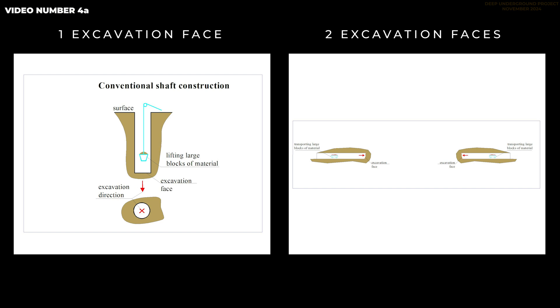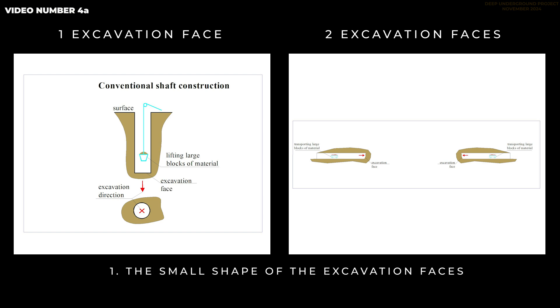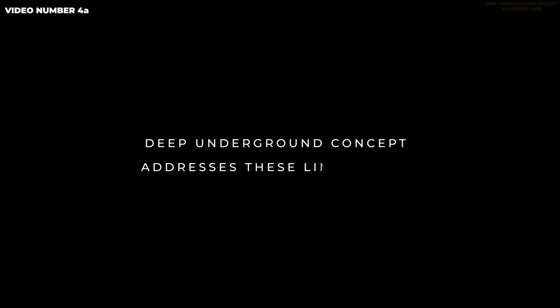There are two main limitations of conventional construction. Number one: the small shape of the excavation faces. Number two: the small number of excavation faces. The deep underground concept addresses these limitations by enabling a large number of excavation faces.